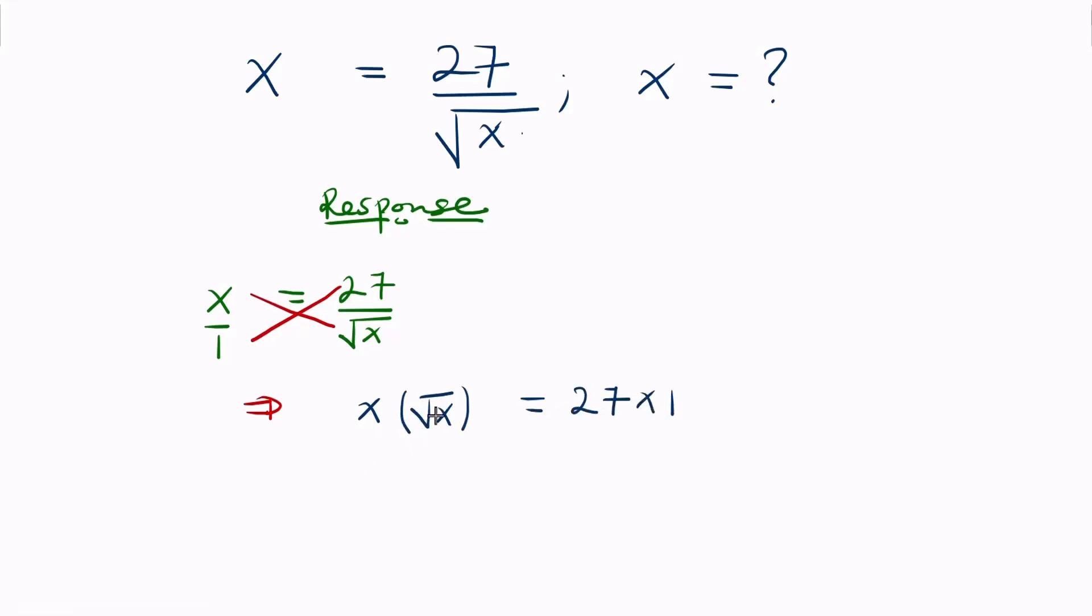From indices, the square root of x is the same as x to the power of one-half. So we have x multiplied by x raised to power half equaling 27.